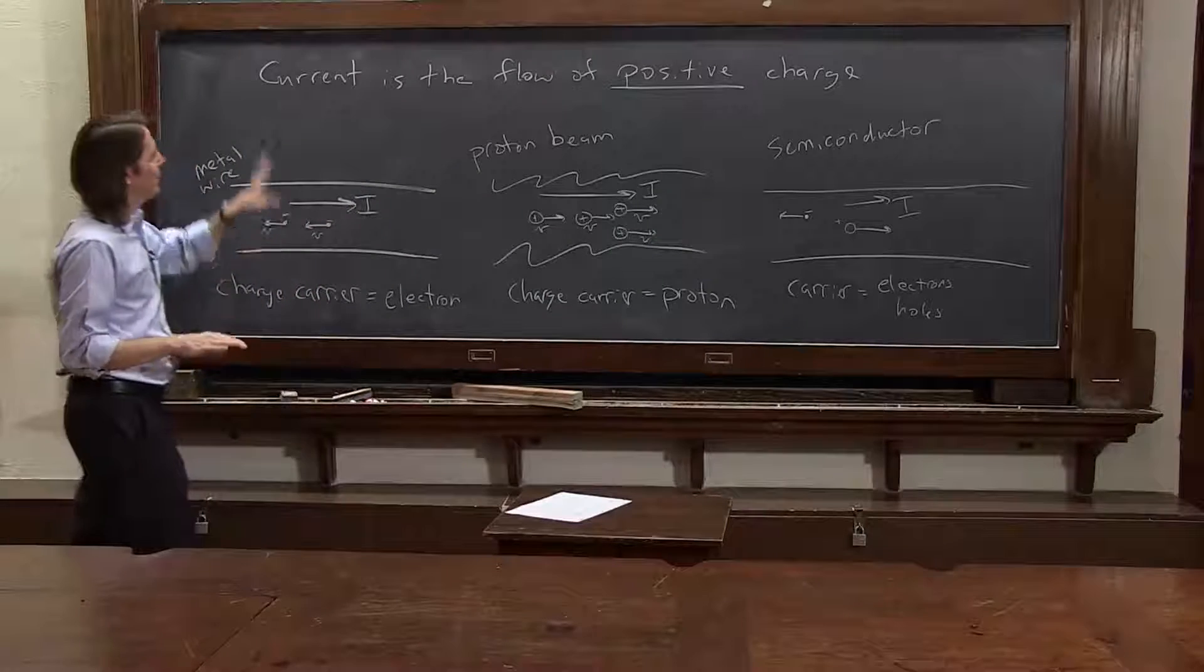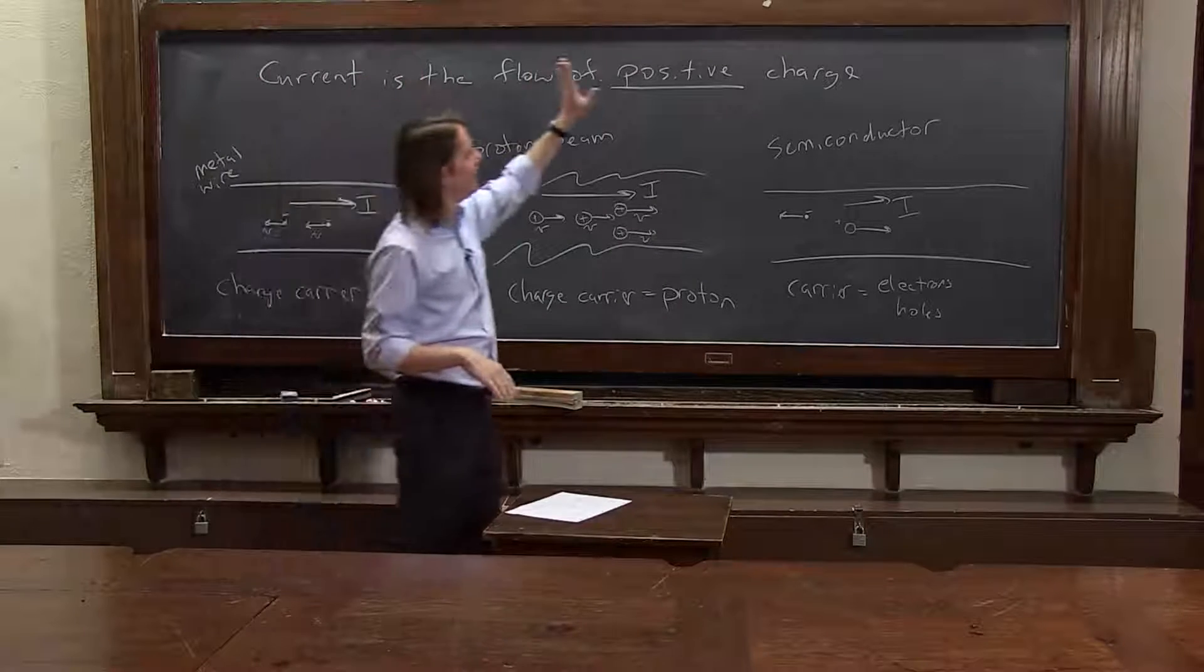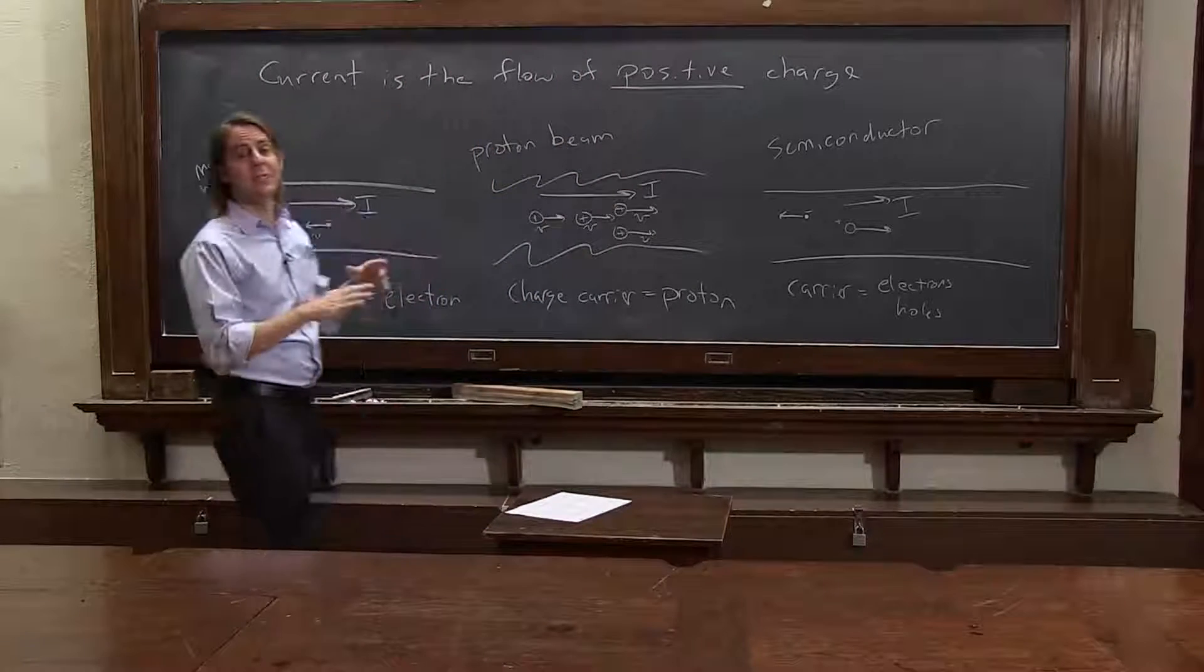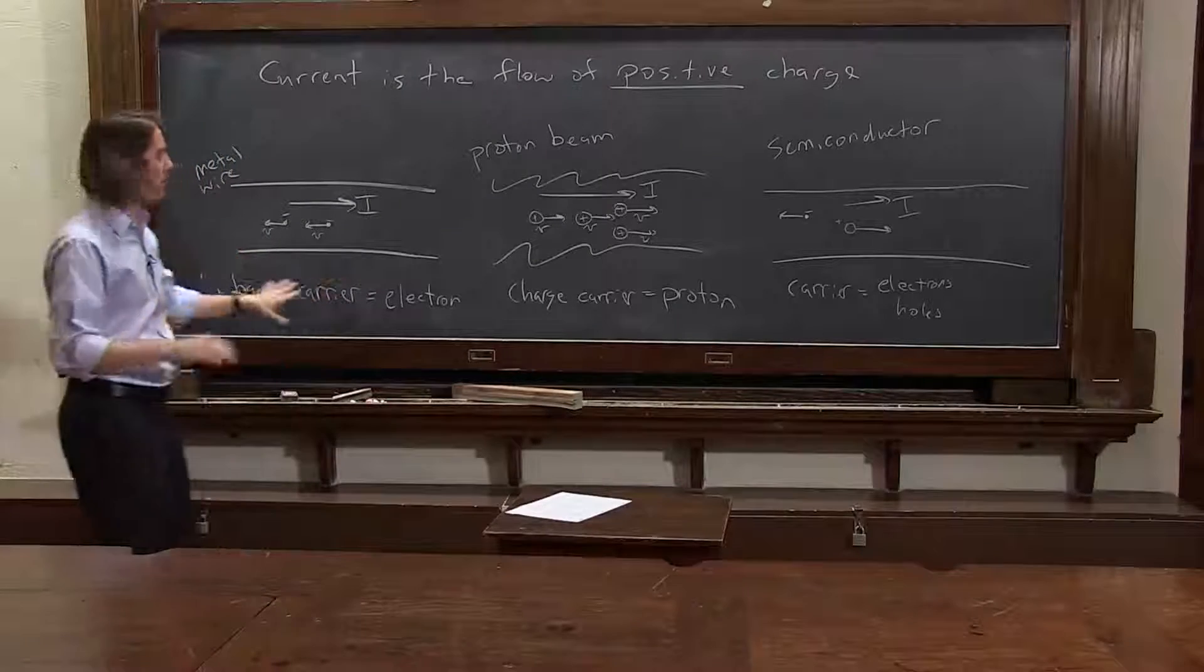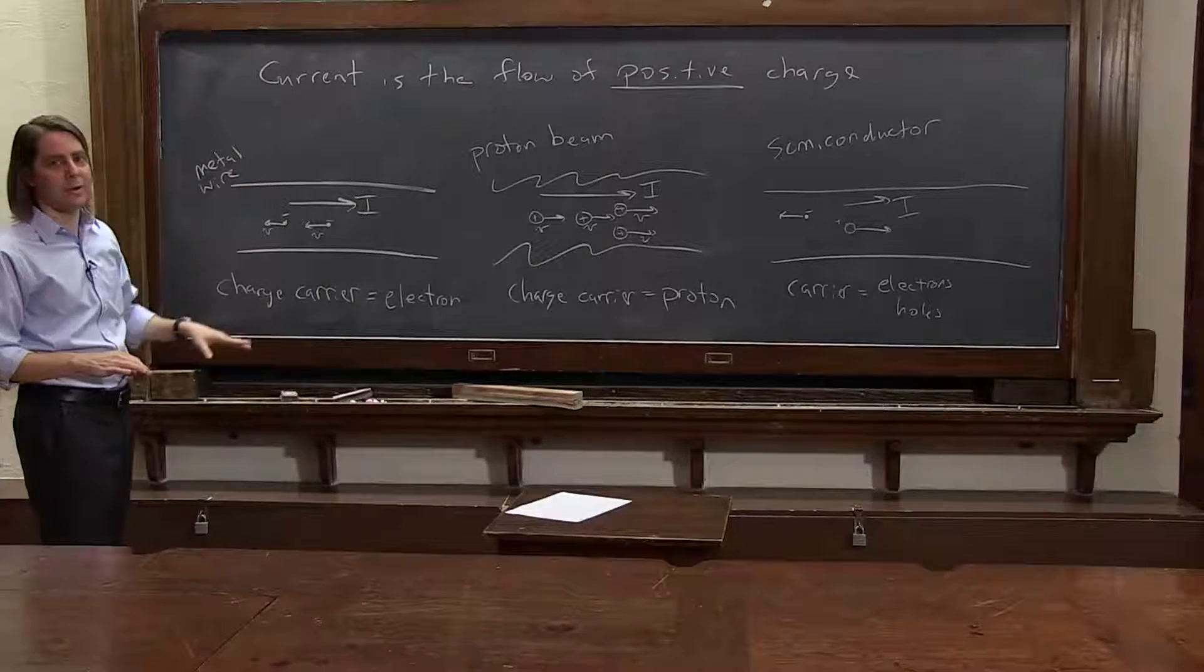But that's something to always keep in mind. Current is defined as the flow of positive charge, even if you're working in a metal where all the charge carriers are negative. We can't fix it. We're just stuck that way.